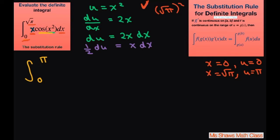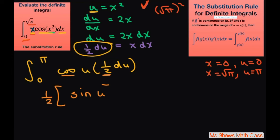And then I have cosine of u, and x dx equals 1 half du. Alright, so now what we're going to do is go ahead and evaluate. I'm going to pull out this 1 half. The antiderivative of cosine is sine. So you have sine of u, and we're evaluating from 0 to pi.